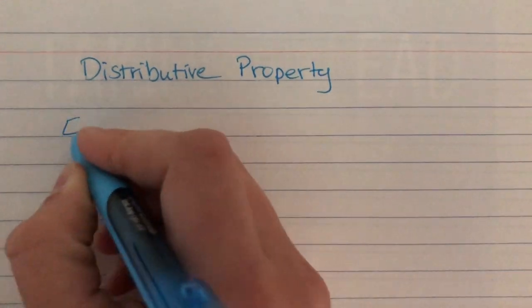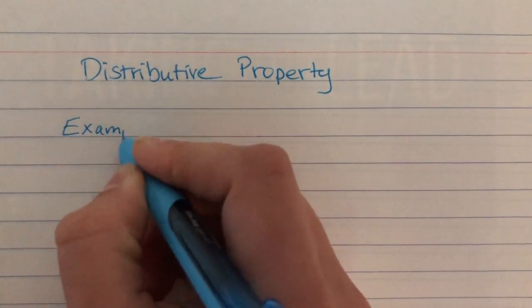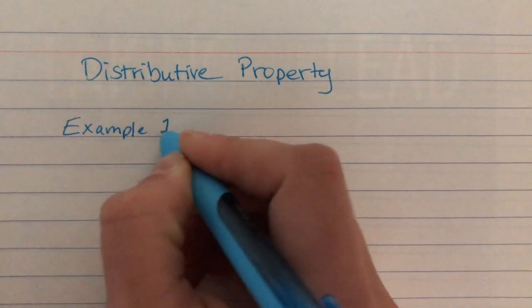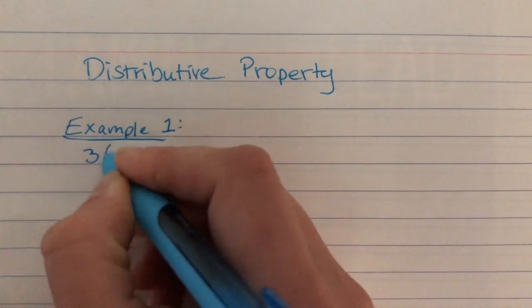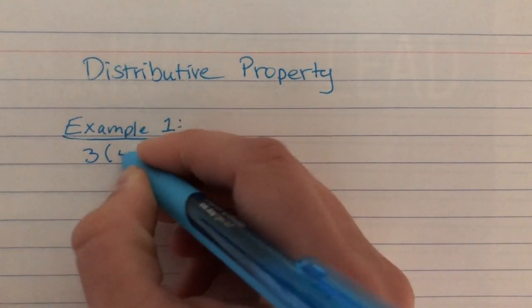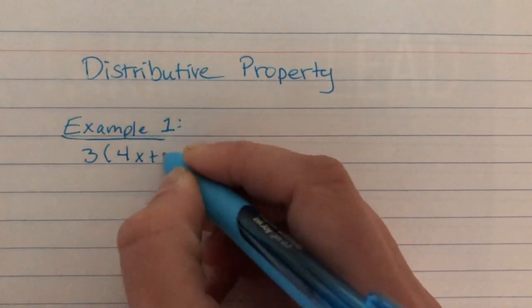For example 1, we're going to use the problem 3 times, in parentheses, 4x plus 5.